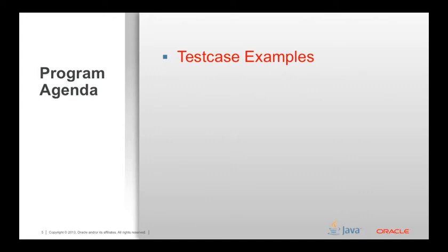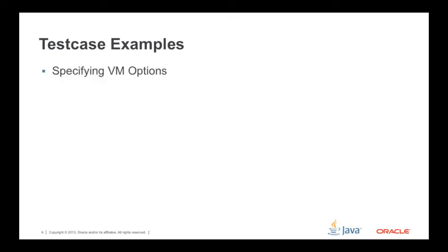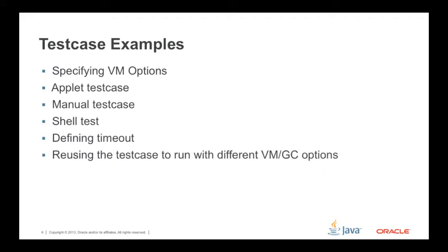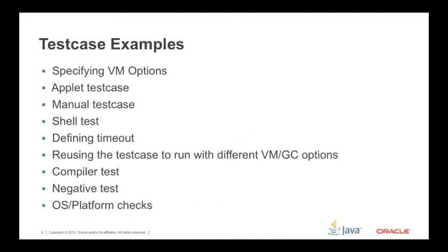Let me start with Test Case Examples. In this video, I am going to cover: a test case showing specifying VM, GC and Hotspot options; Applied Test Case; Manual Test Case; Shell Test; defining timeout in the test source; reusing the test case to run with different VM, GC, and Hotspot options; Compiler Test; a Negative Test; and OS Platform Checks.